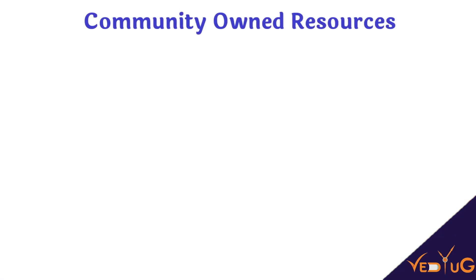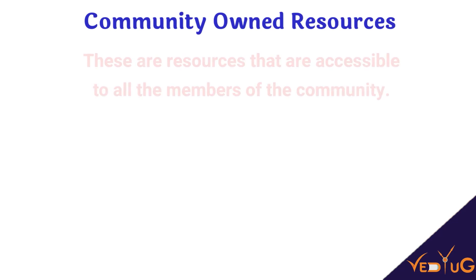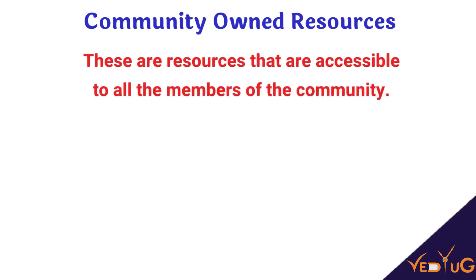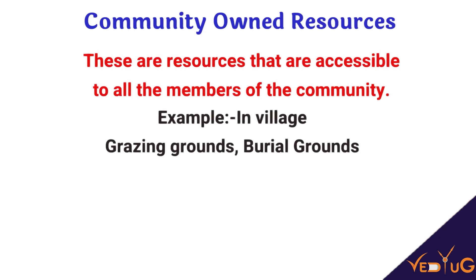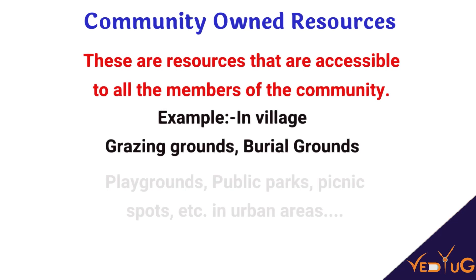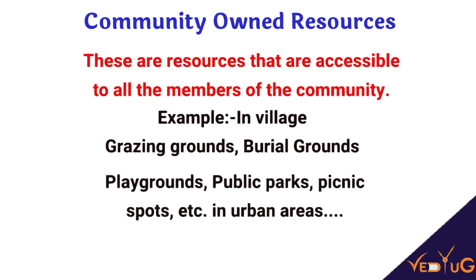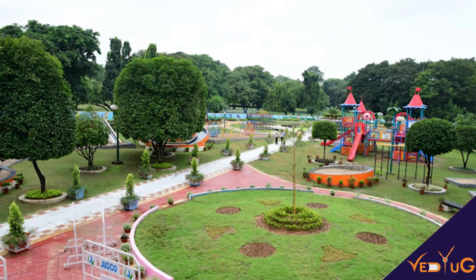The second type is community-owned resources. These are resources available to all members of the community or society. For example, playgrounds, public parks, and burial grounds are available for every member of society.